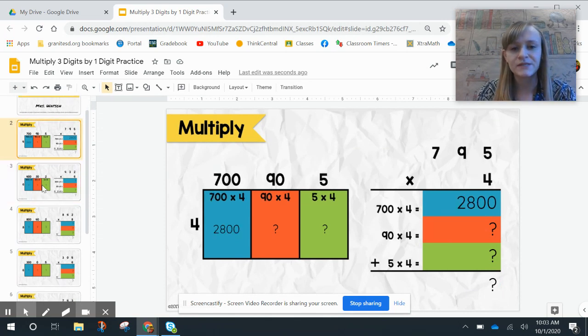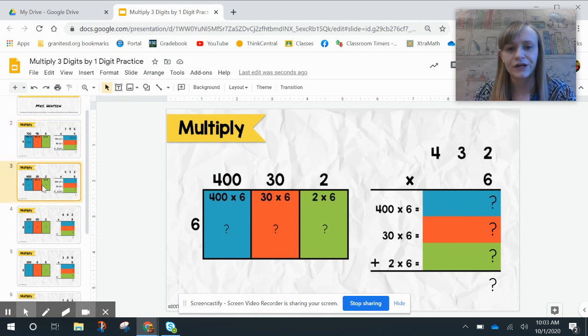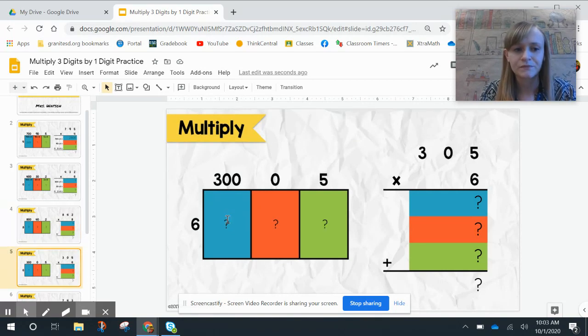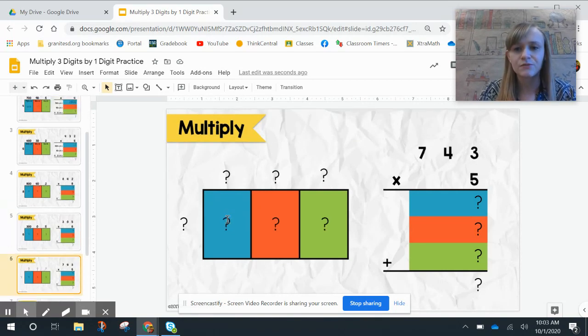So the first two problems have all the supports in there for you. The next problem, it no longer puts the multiplication problem here for you because you should be able to do that on your own. And then the last two problems, you need to fill in your area model.